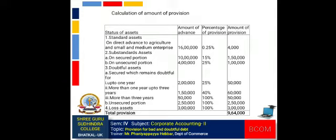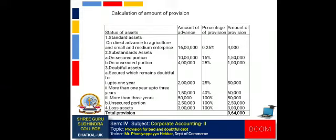Second, substandard assets — (A) on secured portion: amount of advance Rs. 10 lakh, percentage of provision 15%, amount of provision Rs. 1 lakh 50,000. (B) on unsecured portion: amount of advance Rs. 4 lakh, percentage of provision 25%, amount of provision Rs. 1 lakh.